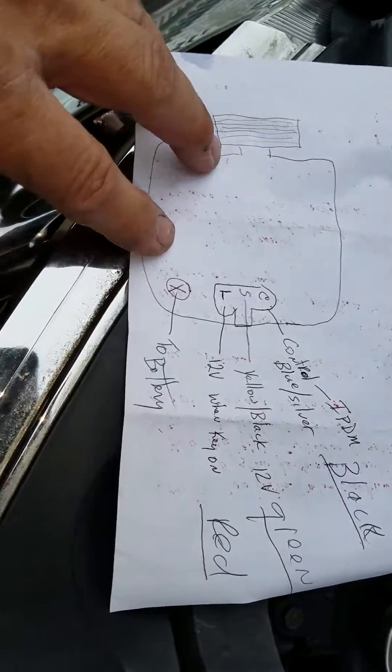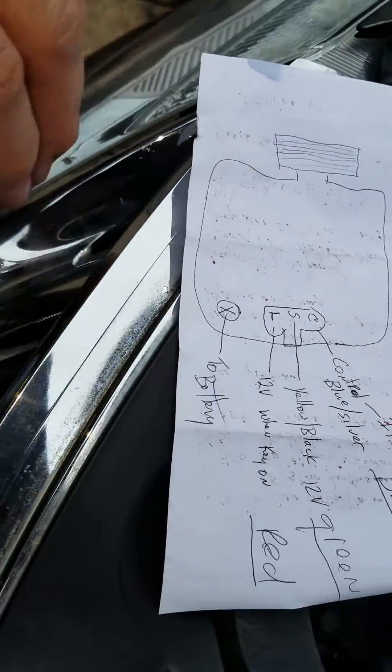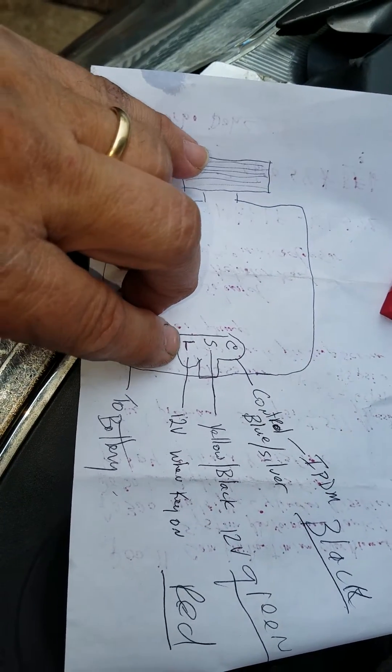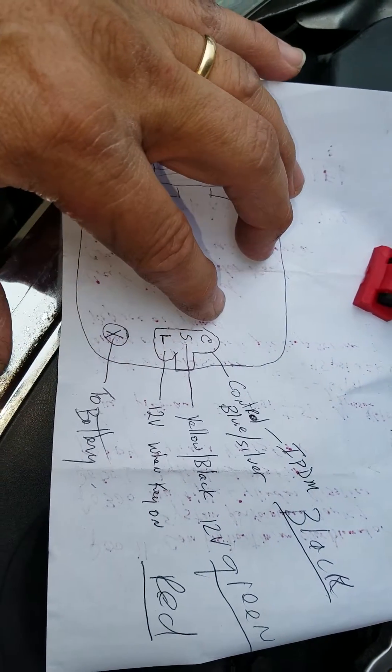So this is just a rough drawing of the alternator. As you're looking down at it, it has three positions on there: an L, an S, and a C.